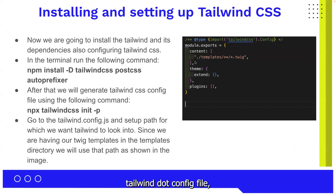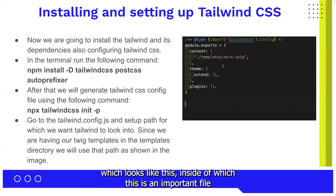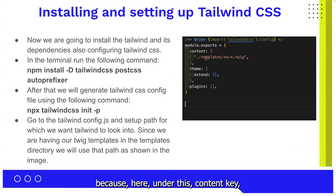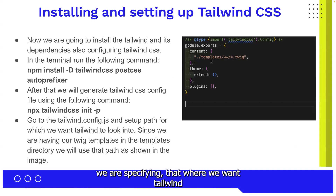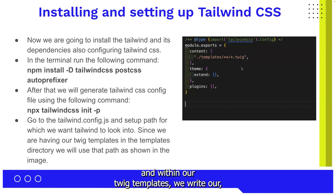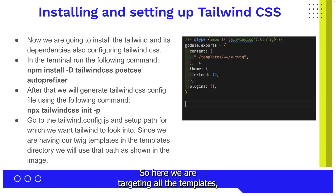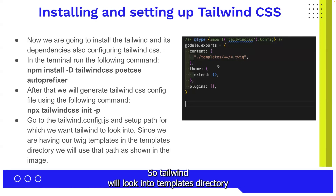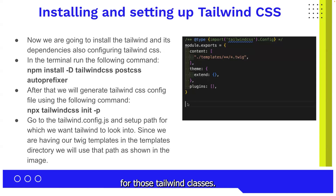After executing the init command, we'll have a tailwind.config file. This is an important file because under the content key, we specify where Tailwind CSS should look for Tailwind CSS classes. Since we are primarily working with templates — and within our Twig templates we write our HTML structure — we are targeting all templates ending with the .twig extension, mentioning the path so Tailwind will look into the templates directory for those Tailwind classes.